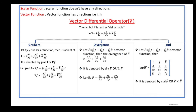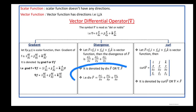The divergence is denoted by div f-bar or del dot f-bar. That is: div f-bar = ∂f1/∂x plus ∂f2/∂y plus ∂f3/∂z. This is the formula of divergence.